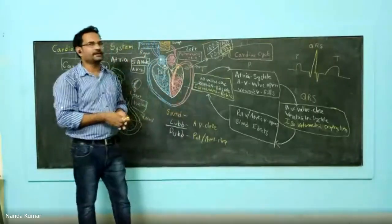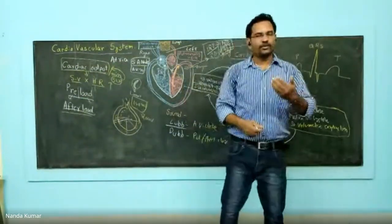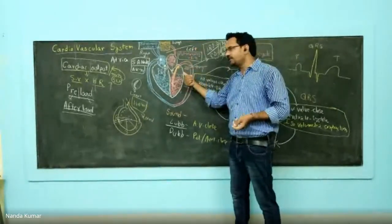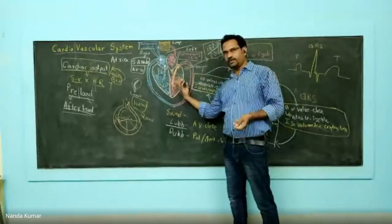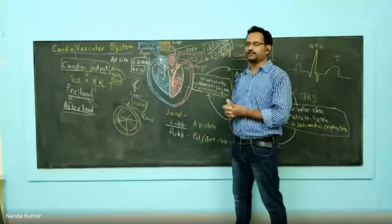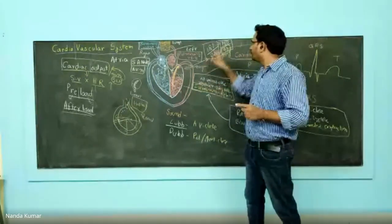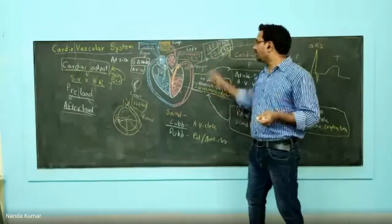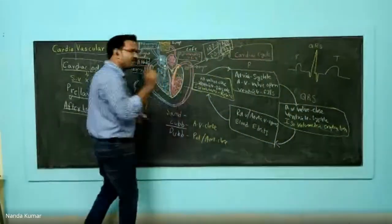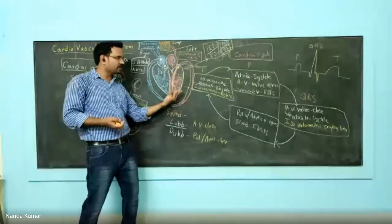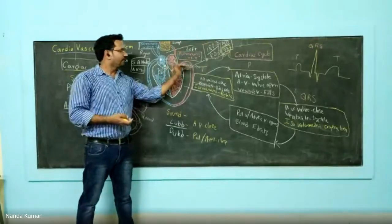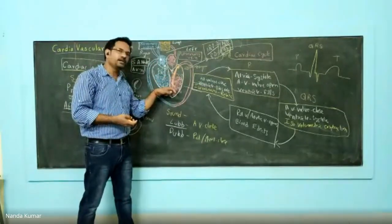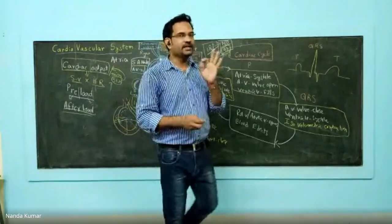Normal blood pressure is 120 by 80 — systolic and diastolic measured in the aorta. When ventricle contracts, blood reaches the aorta and pressure is 120 mmHg. When ventricle relaxes, blood moves down and pressure is 80 mmHg. Hypertension is anything greater than or equal to 140 by 90 mmHg. Diastolic pressure rising just 10 units causes hypertension and is very dangerous because it directly affects left ventricular function. The ventricle has to contract more rigorously to pump blood into the aorta. That increases pressure — ventricular wall tension — damaging the ventricular wall.